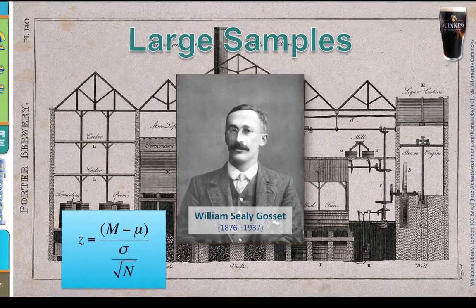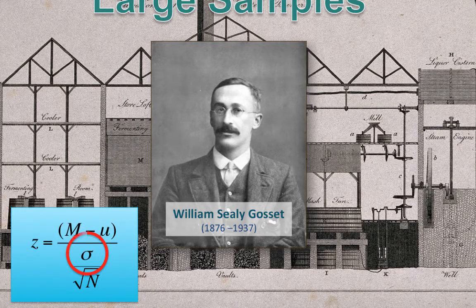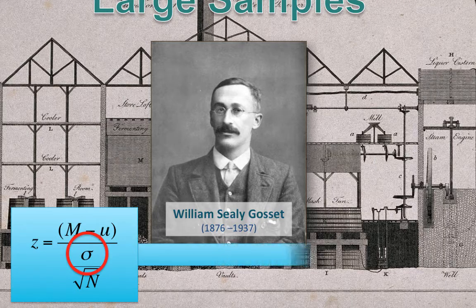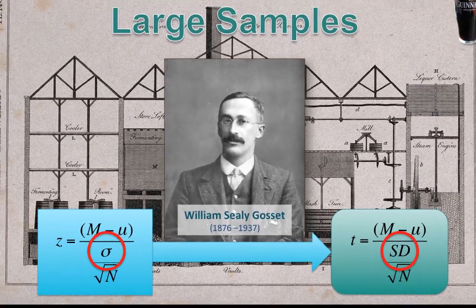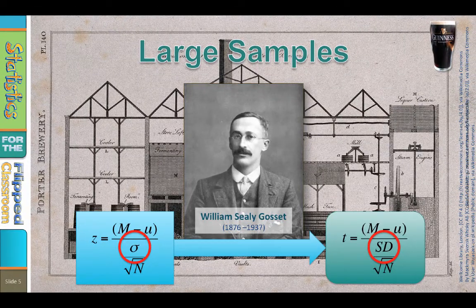Here is the formula for a z-test. The problem was this error term sigma — the standard deviation of the population. If you don't know the standard deviation of the population, you could specify it, such as using Gossett's acceptable range of variability, or you could estimate it using the standard deviation of the sample. Take what you know from the sample and apply it to the population. It's not a problem when your sample size is reasonably large, because with reasonably large sample sizes, the standard deviation of the sample is a fairly close approximation to the standard deviation of the population.